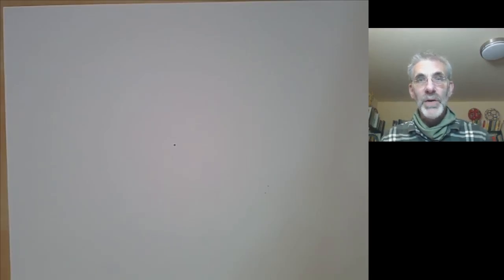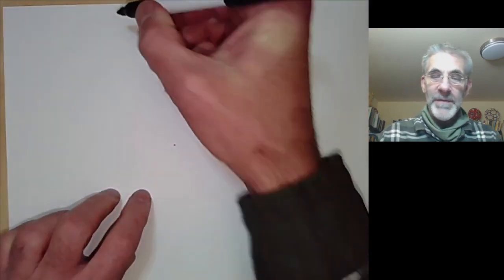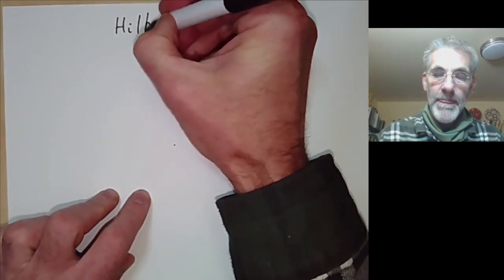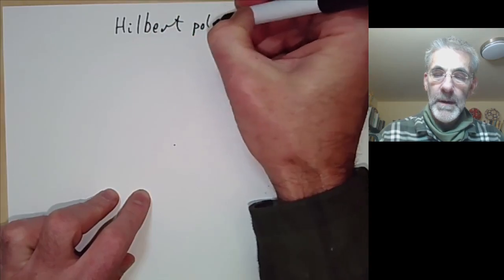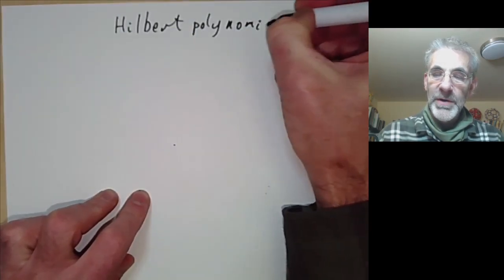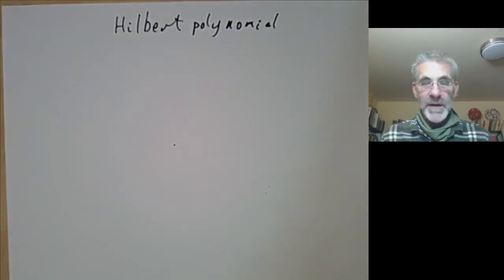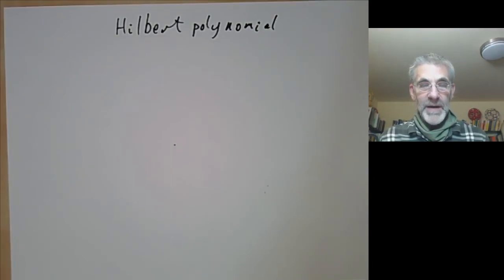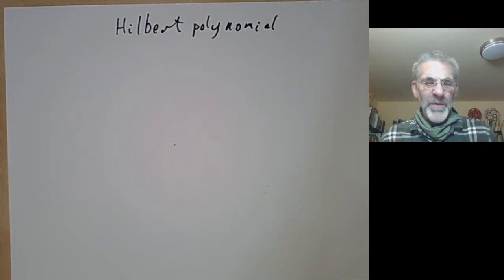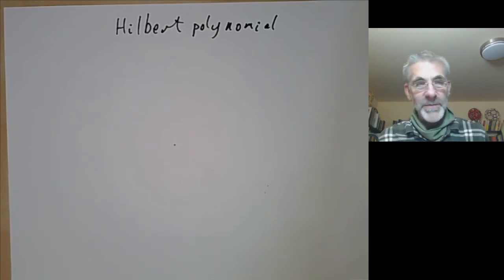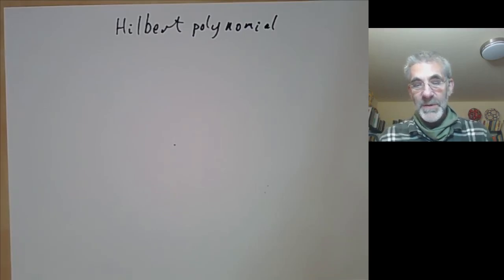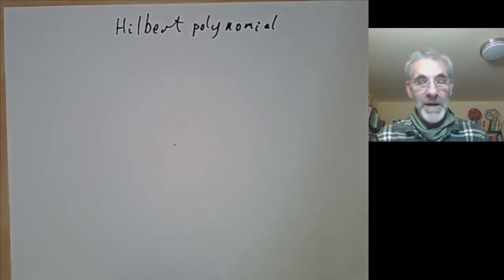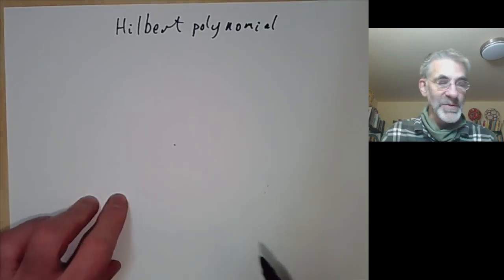This lecture is part of an online course on commutative algebra and will be about the Hilbert polynomial. We will use the Hilbert polynomial in order to define the dimension of a local Noetherian ring. For this lecture we won't really worry too much about dimension or local rings; we'll just define the Hilbert polynomial as some sort of abstract object.